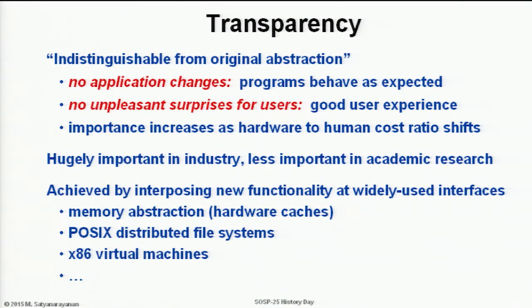Now we come to the quest for transparency. It's useful to ask: what is transparency and why is it so important? I characterize transparency as the ability to present an implementation of some abstraction that is indistinguishable from the original. This is important from a programmer's point of view because your old code works — you don't have to touch it to make it work on the new system. From a user's perspective, it's important because you don't get unpleasant surprises. Guaranteeing this transparency is hard, and a lot of sweat — especially in industry — goes into preserving it. In academia, it's not an attribute that is so well valued, but in the real world it is a very, very big factor.